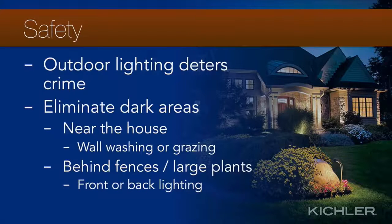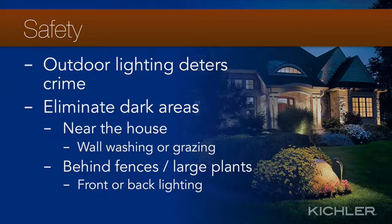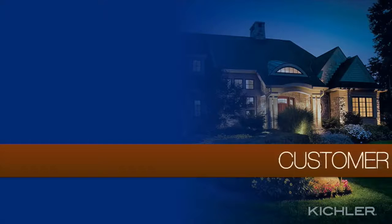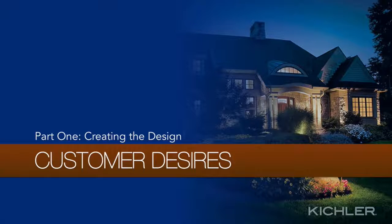It's a well-known fact that outdoor lighting deters crime. The key to increasing security with outdoor lighting is to eliminate dark areas that could conceal prowlers. This does not mean the property must be lit like a parking lot, but you should be attentive to ensuring the property is lit throughout, especially with no dark areas near the house wall. Wall washing or grazing on all sides of the house can go a long way, and illuminating areas behind large plant material, fences, or other architectural elements eliminates hiding places.